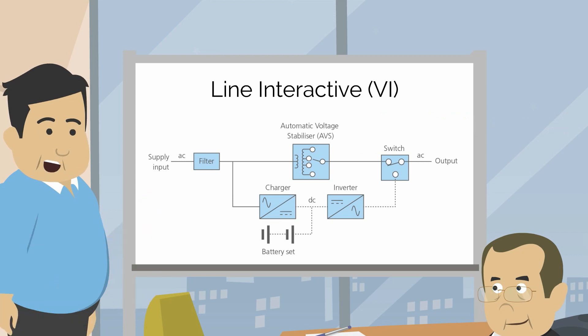With the AVS connected to the load, it is able to provide protection against voltage instability by increasing or decreasing the voltage if the main supply falls out of tolerance. The switchover period to batteries still exists in this design, however it is typically reduced to around five milliseconds.